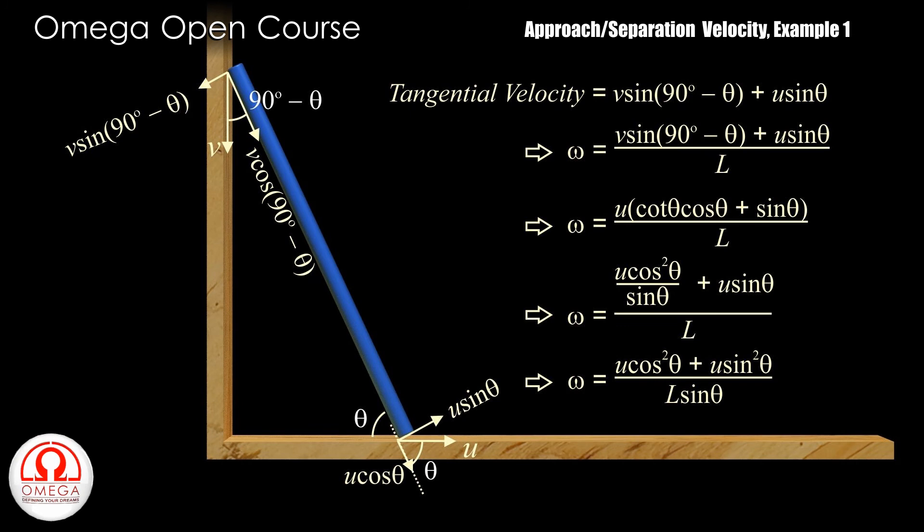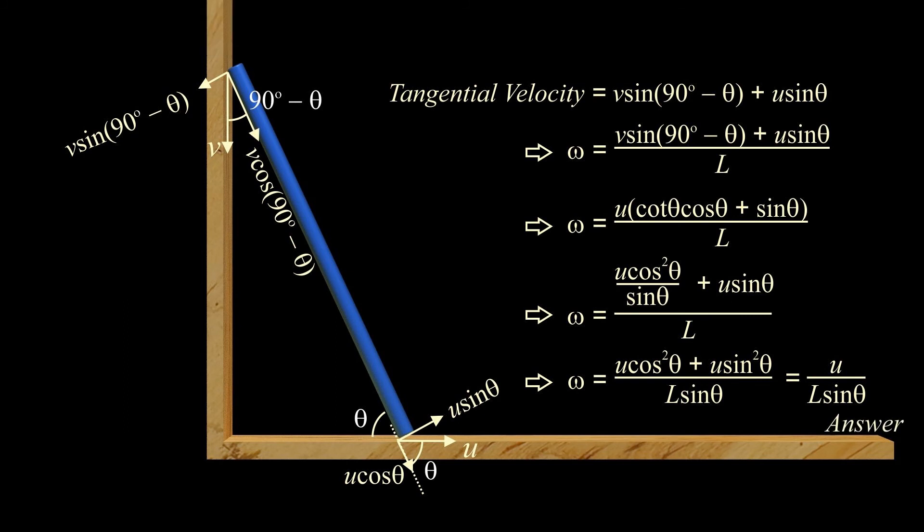Simplifying, we get u cos square theta plus u sin square theta by L sin theta or u by L sin theta. This is our answer.